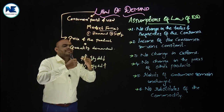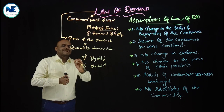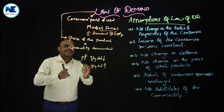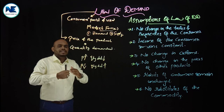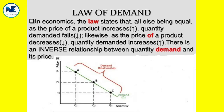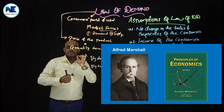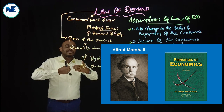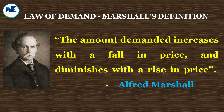I would like to state the law of demand like this: ceteris paribus, there is an inverse relationship between the price of the product and the quantity demanded of that product. That means when price increases, the quantity demanded will decline, and when price declines, the quantity demanded of that product will increase. This is attributed to Alfred Marshall — you can add that point into your answer.